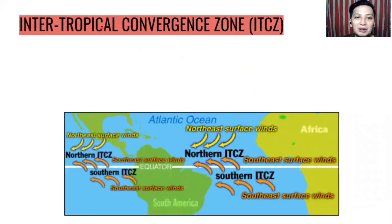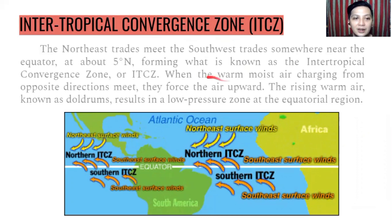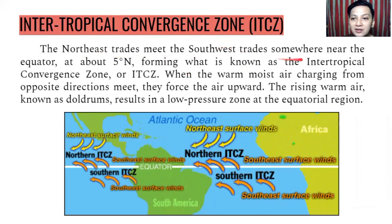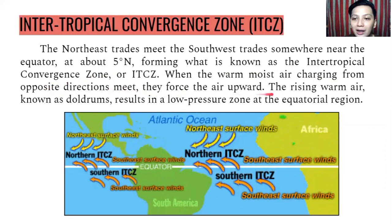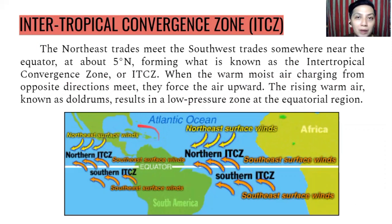Now let's talk about the Intertropical Convergence Zone, or ITCZ. The northeast trades meet the southwest trades somewhere near the equator, about 5 degrees north, forming what is known as the ITCZ. When the warm, moist air charging from opposite directions meet, they force the air upward — this rising warm air, known as the doldrums, results in a low-pressure zone at the equatorial region. That is why there is usually a lot of rainfall and formation of tropical cyclones and typhoons near the equator because of this ITCZ.